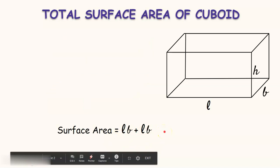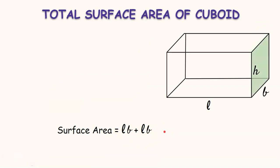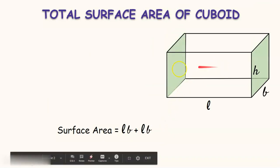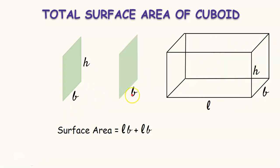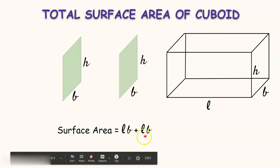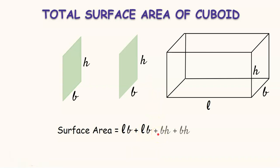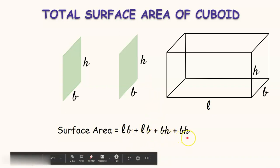Now let us take another two faces which are side faces and are opposite to each other. Their dimensions are B and H. Let us find the area of these two faces. Each face has dimensions B and H, so the area of each face is B×H. Adding these two areas to the previous, we get LB + LB + BH + BH.